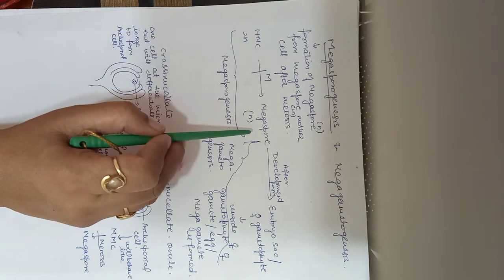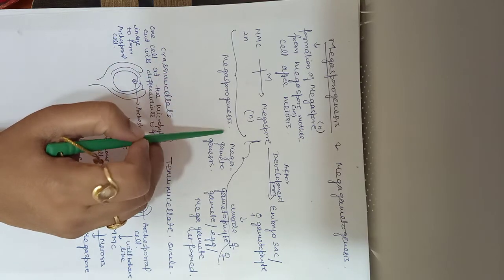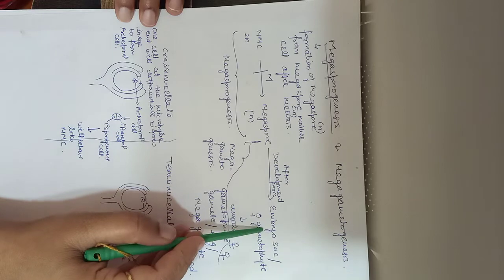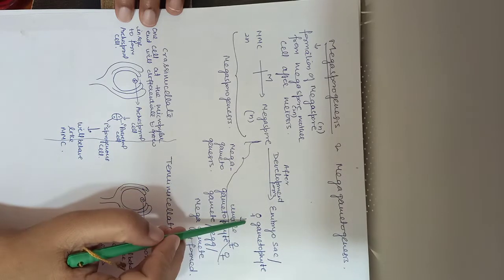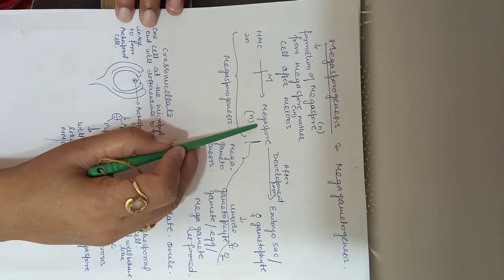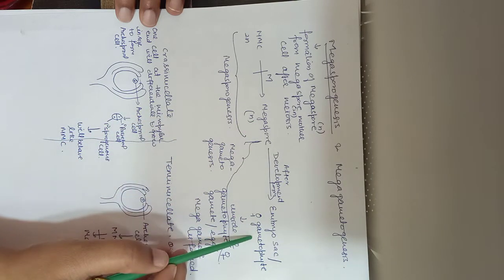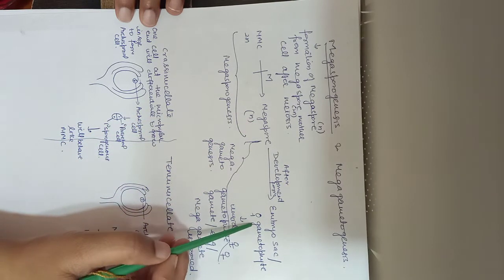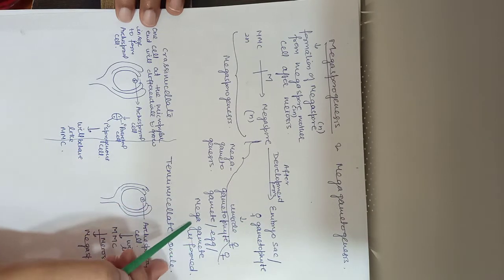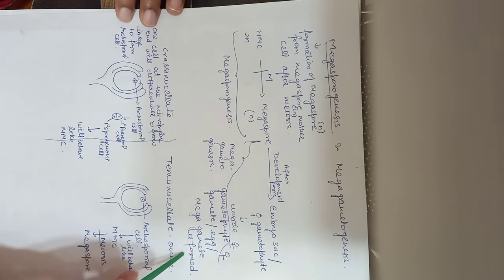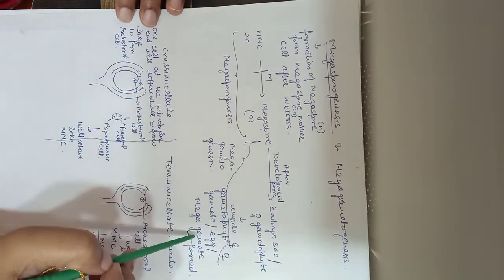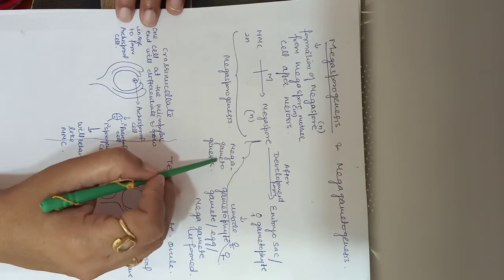Up to the formation of megaspore is known as megasporogenesis. Then this megaspore, after development, will form embryo sac or female gametophyte. Inside this female gametophyte, egg gamete or megagamete is formed. Inside the embryo sac, the egg will be formed, and the process of formation of egg is known as megagametogenesis.